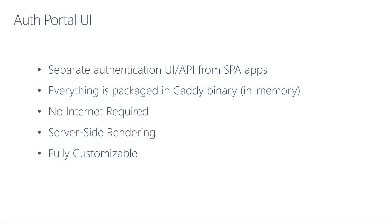Where did we start with the authentication portal UI? I wanted to build SPAs—single-page apps—but I realized there is a lot of work that goes into creating authentication features, and that just doesn't scale well. You want the authentication portal to be separate from your SPA, so that your mobile app can redirect to a regular web UI, authenticate there, and then return to the mobile application.